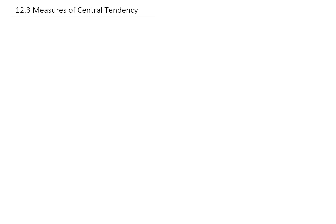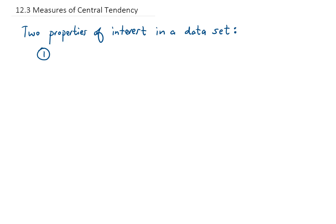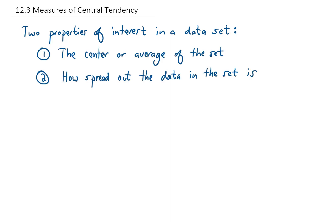When we're studying a big set of data, there are often two main properties that we're interested in: where the center or the average value of the set is, and how spread out the data is. In this video, we're going to talk about different measures of center, or different types of averages for a data set.